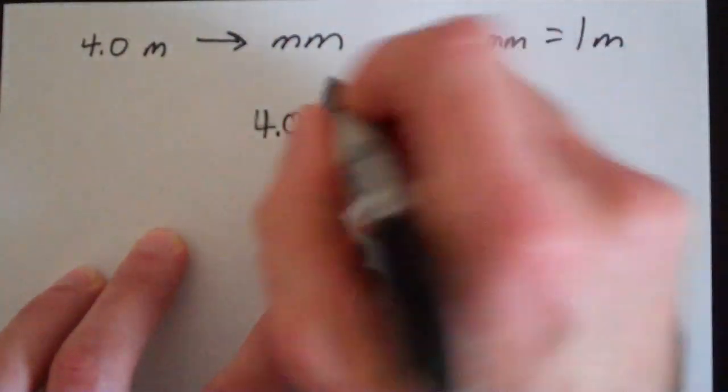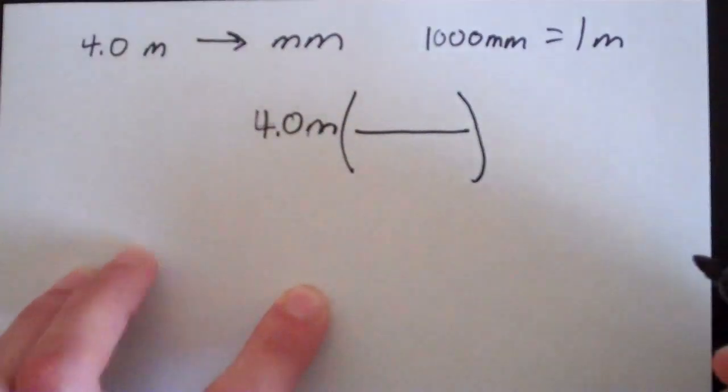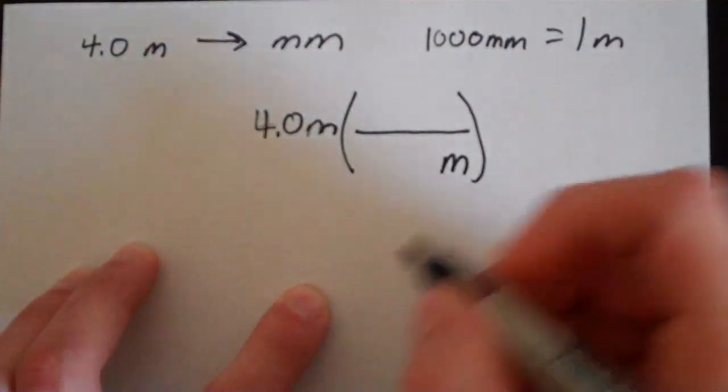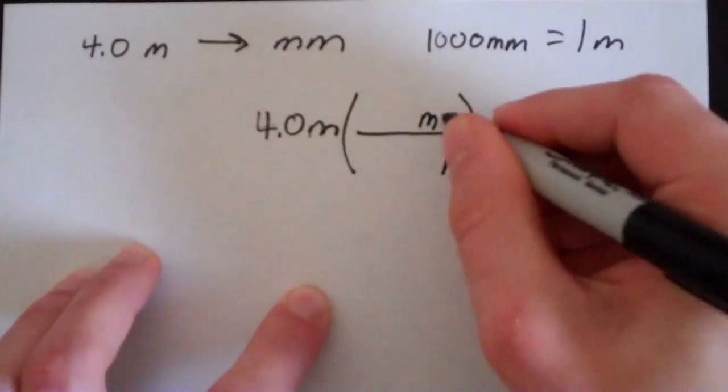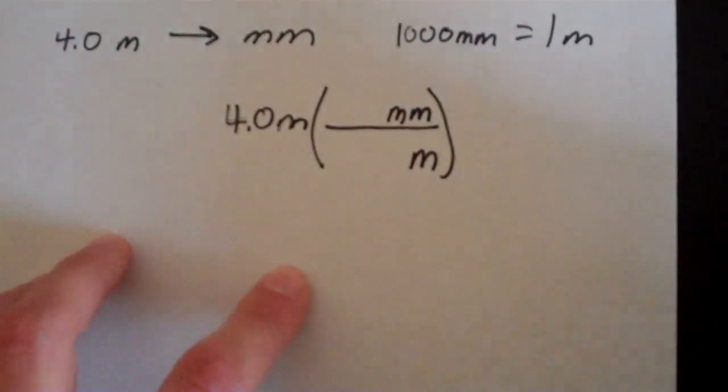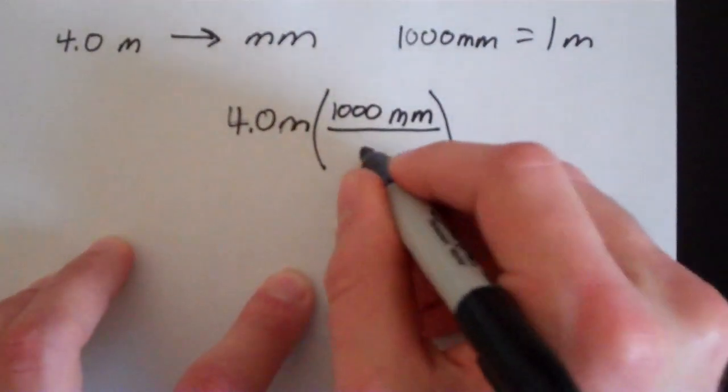We want to get rid of meters and end up with millimeters. So I'm going to put meters on the bottom, divide by meters to cancel them out, and we're going to multiply by millimeters to put them on top. And we said that 1000 millimeters are in 1 meter.